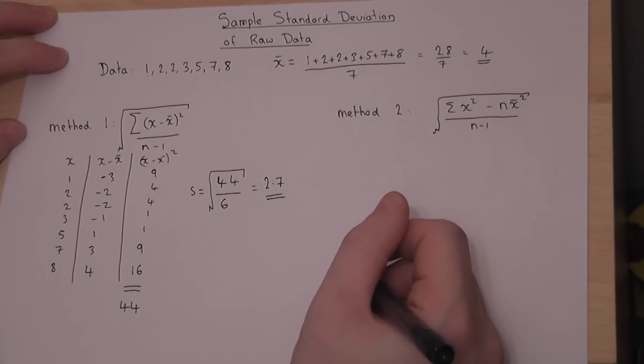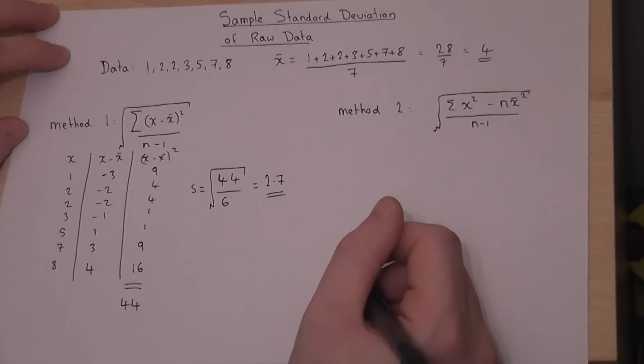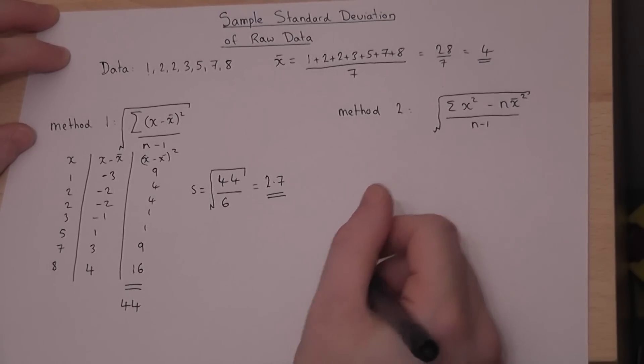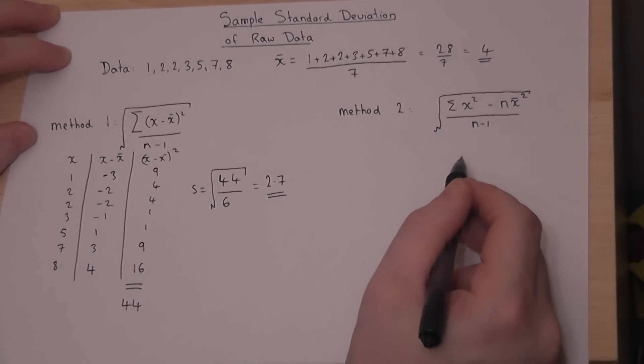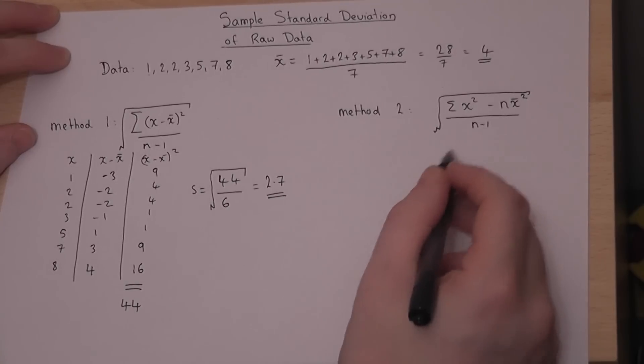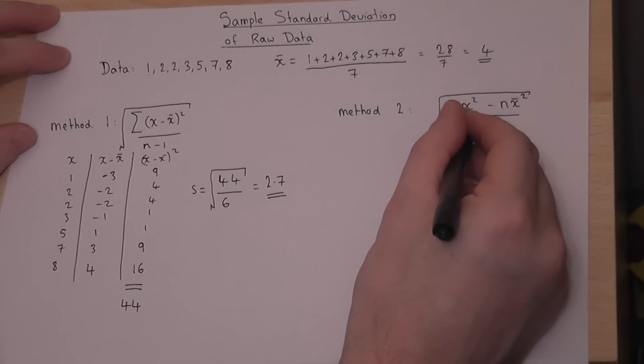Now, method 2, which you might prefer, is given by a different formula. They are equivalent. This just says that we add together the square of the data values itself.